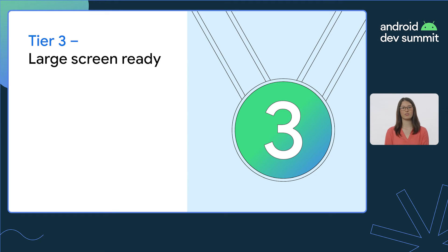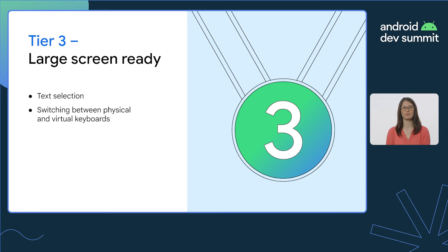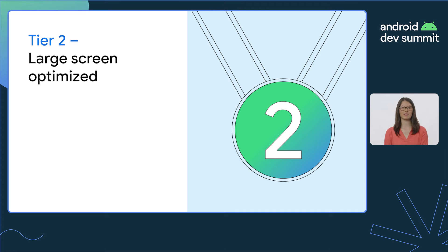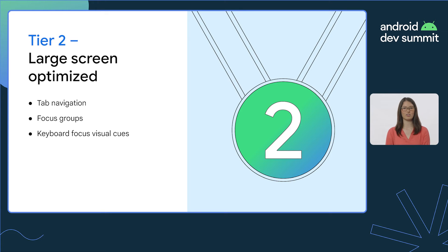Tier 3, also referred to as large screen ready, is our basic level of support. Tier 2, also referred to as large screen optimized, is our next level of support. This tier goes beyond the basic support to add some large screen specific features that will create a more enjoyable user experience. Some highlights of this category include tab navigation, setting focus groups, adding visual cues for keyboard focus, custom visual cues, mouse wheel zooming, and hover states.